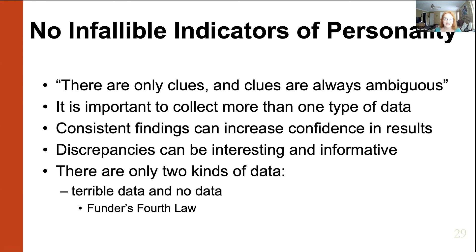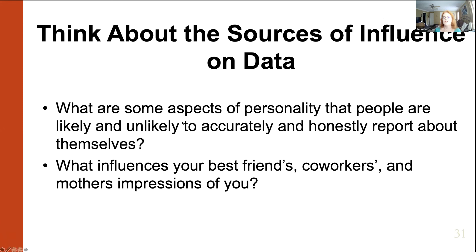Funder says there are only two kinds of data: terrible data — which unfortunately all four sources have their problems — and no data. Even with their problems, they're better than no data. There are things that people might not want to admit about themselves, like selfishness, vulnerability, or narcissism. We seem to have an idea in our head of what a good, socially desirable personality is like. When parts of ourselves don't match up to that socially desirable level, people try to say things to make themselves look better than they truly are, because they don't want to look bad in society.